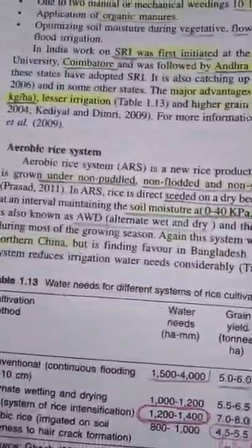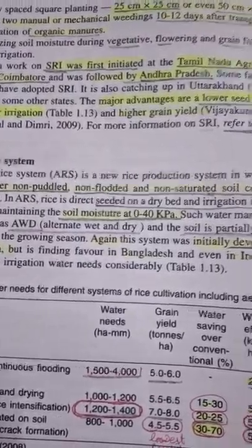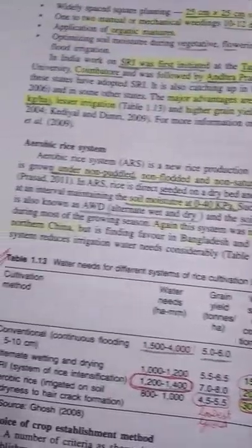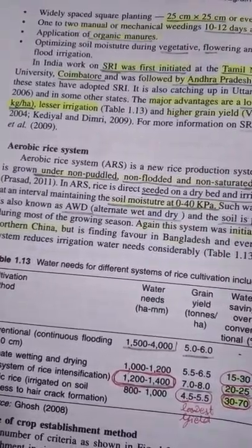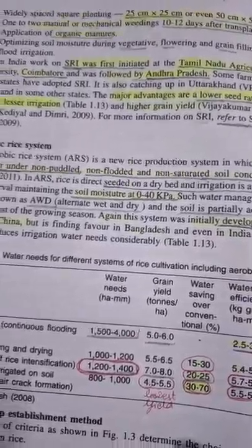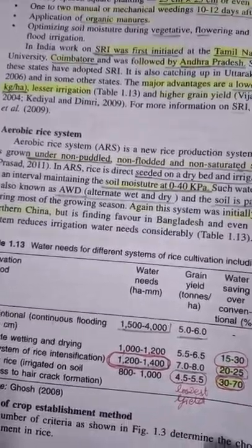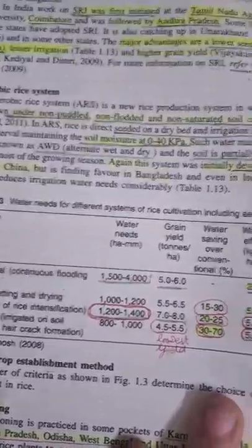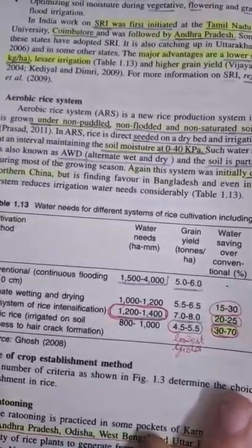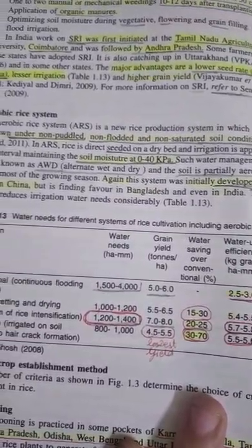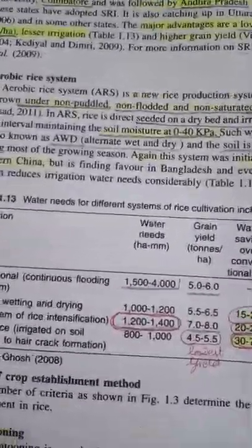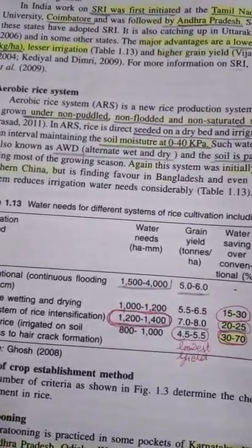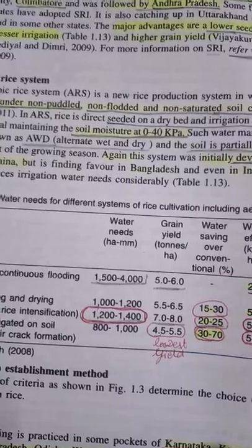A question can also come from this: in India, work on SRI was first initiated at Tamil Nadu Agricultural University, then followed by Andhra Pradesh. The main advantages of SRI are lower seed rate — 7.5 kg per hectare — lesser irrigation required, and higher grain yield. Please remember this. Also remember ARS — Aerobic Rice System — a new rice production technology in which rice is grown under non-flooded, non-puddled, and non-saturated soil conditions. Rice is direct seeded on a dry bed and irrigation is applied at intervals, maintaining soil moisture at 0 to 40 kPa.